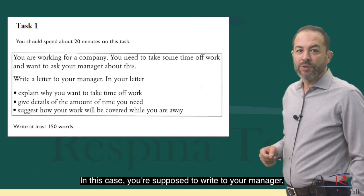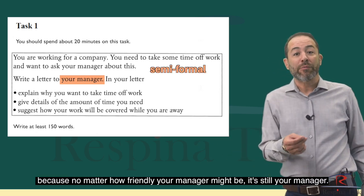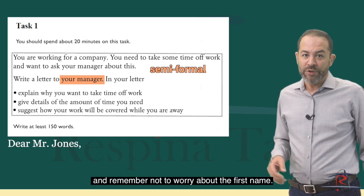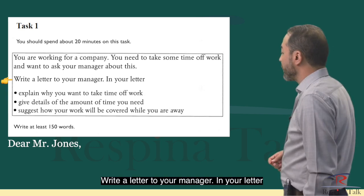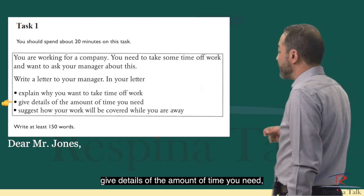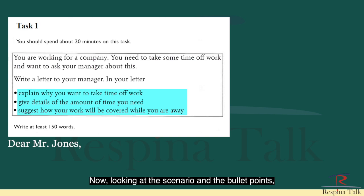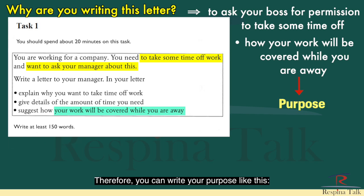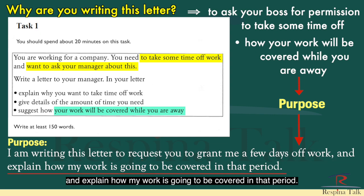Let's look at another example. Here you're writing to your manager — someone you know — so this is a semi-formal letter. Begin with 'Dear Mr. Jones.' The scenario is: you're working for a company, you need to take some time off, and you want to ask your manager. Looking at the scenario and bullet points, you can figure out that you're writing to request permission to take time off and ensure your manager your work will be covered. Therefore your purpose could be: 'I'm writing this letter to request you to grant me a few days off work and explain how my work is going to be covered in that period.'